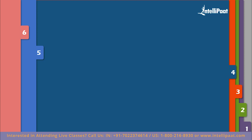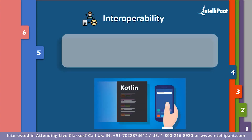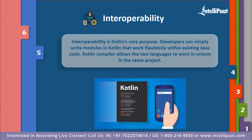Our next factor is interoperability. Interoperability is Kotlin's core purpose. From the beginning, the project's intention has been to use existing knowledge and expertise to make every library available to Kotlin programmers. Developers can write modules in Kotlin that work flawlessly with existing Java code. By emitting bytecode, a Kotlin compiler allows two languages to work in unison in the same project. One-line functions take one line; simple structs or Java beans can be declared in one line. Real properties generate getters and setters behind the scenes for Java interoperability, and adding the data annotation to a class triggers auto-generation of boilerplate like equals, hashCode, toString, and more.